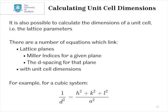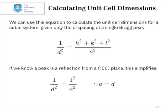For example, for a cubic system, 1/d² = (h² + k² + l²)/a². We can use this equation to calculate the lattice parameters for a cubic system, given only the d-spacing of a single bright reflection.